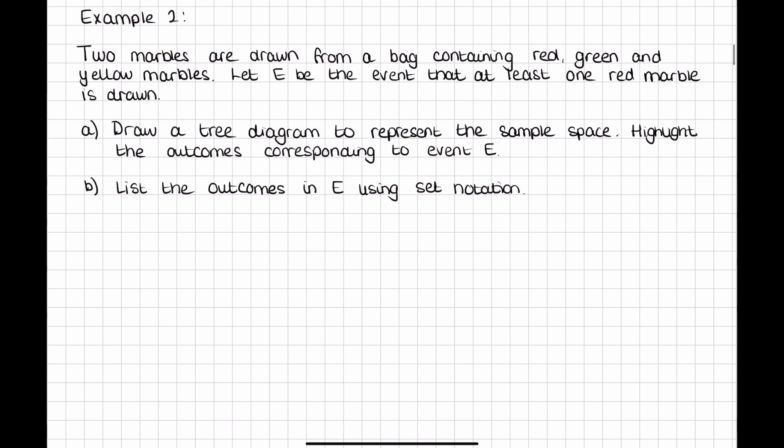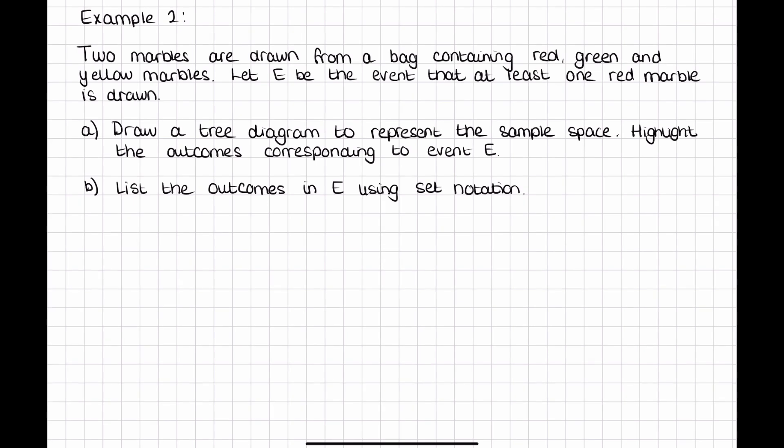Example two: two marbles are drawn from a bag containing red, green, and yellow marbles. Let E be the event that at least one red marble is drawn. Draw a tree diagram to represent the sample space, highlight the outcomes corresponding to event E, and in part B list the outcomes in E using set notation.